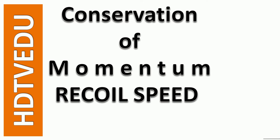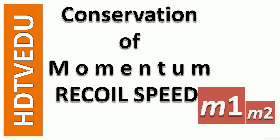Conservation of momentum: recoil speed for the gun. M1 is the gun and is bigger, M2 is the bullet and is small. Both are at rest before we fire the gun. After we fire the gun, the bullet goes one way. What happens to the gun?